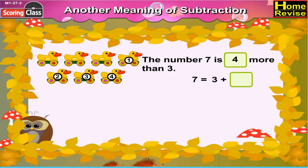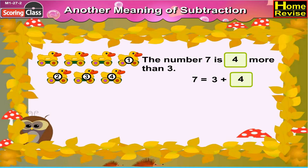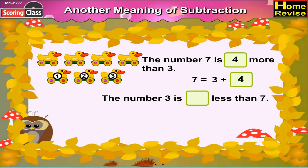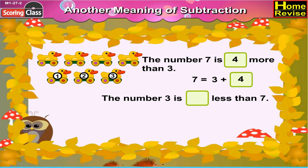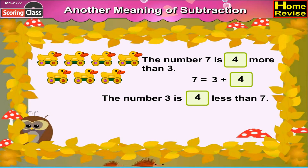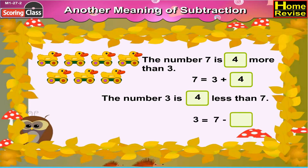It means that 7 is equal to 3 plus how many? You are right. 7 is equal to 3 plus 4. Now, the number 3 is blank less than 7. Is number 3 smaller or bigger than 7? You are right, it is smaller than 7. So, 3 is equal to 7 minus how many? You are right. 3 is equal to 7 minus 4.